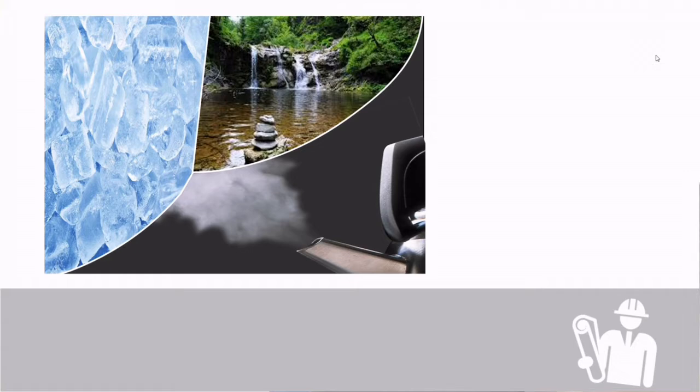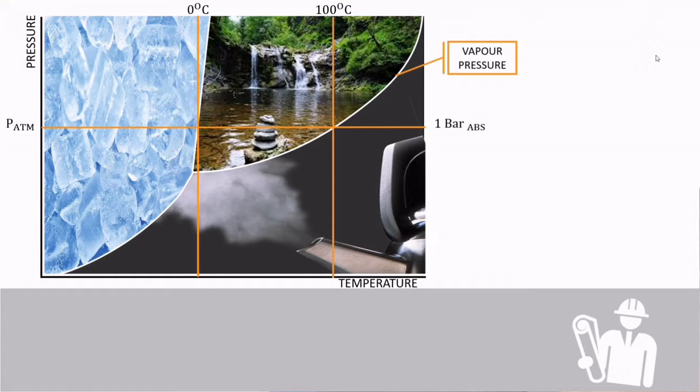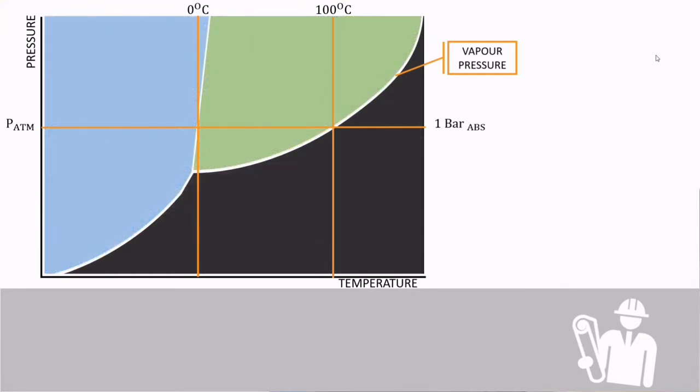When looking at different states of fluids against temperature and liquid pressure, this is called the phase diagram. This shows for standard atmospheric pressure, which is one bar absolute, as we increase the temperature the fluid can change from ice to water and then gas.